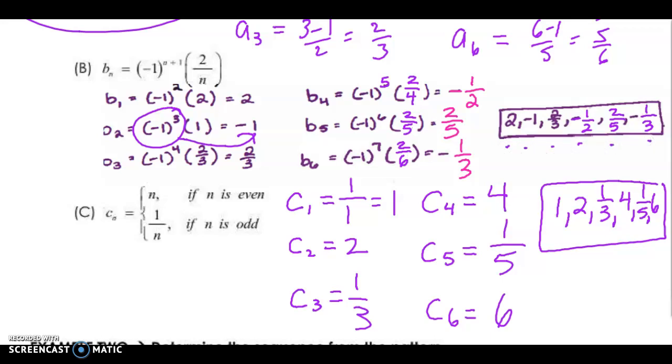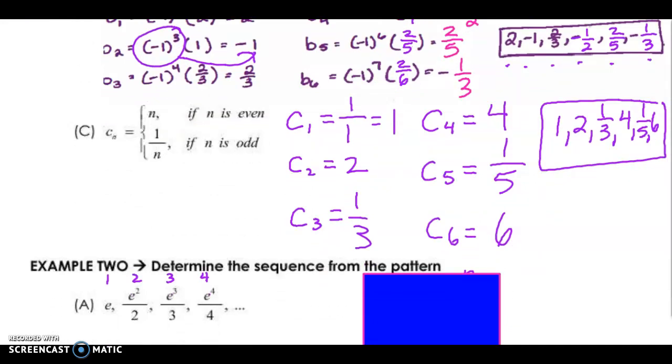And then for c, you've got to be careful because when n, you're going to use this function if n is even, and this one if n is odd. This is really similar to piecewise functions. So when n is odd, c sub 1, n is odd, you're going to use 1 over 1. But now, for the second one, n is even, so you're going to plug it into this one right here and do n. And then for the third one, where n is 3, you're going to plug it into the second one, 1 over n, and so on. So those are your answers. And there's your sequence.